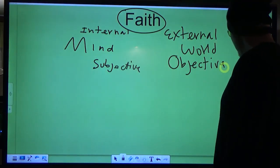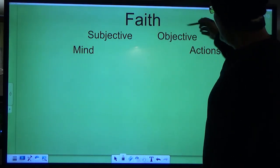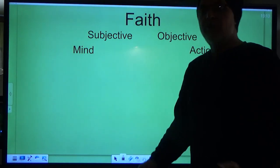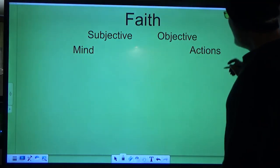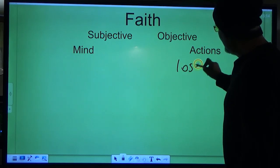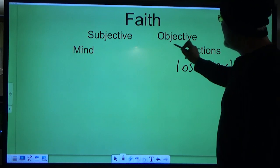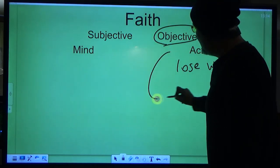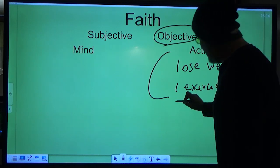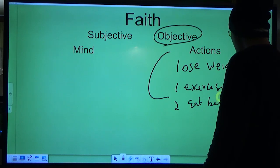So, these things are absolute. You cannot change them. Subjective in mind. Objective in actions. You'll see actions in the world manifested in somebody's behavior. For instance, if somebody believes that they want to lose weight, lose 50 pounds. You will see objectively, you will see them exercise. You will see them eat healthy better.